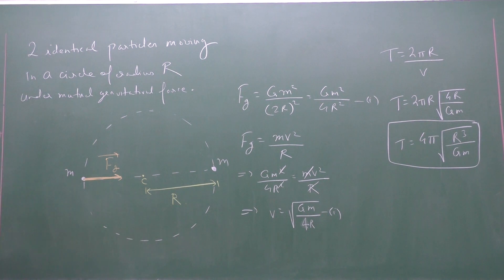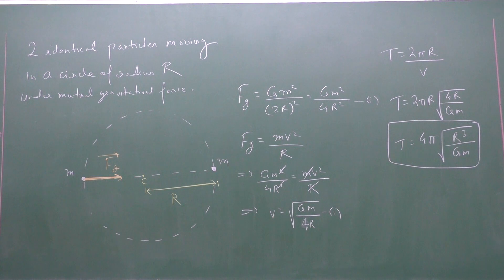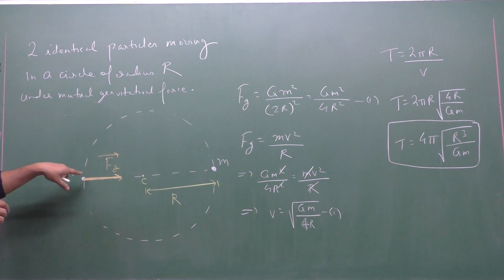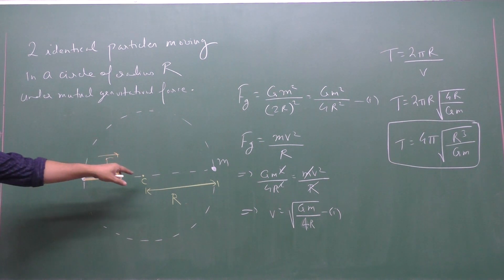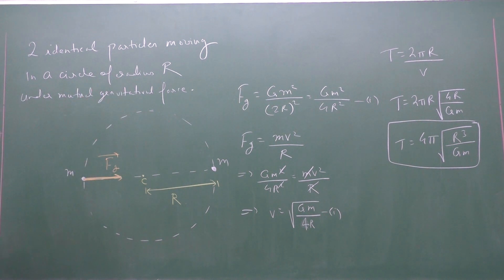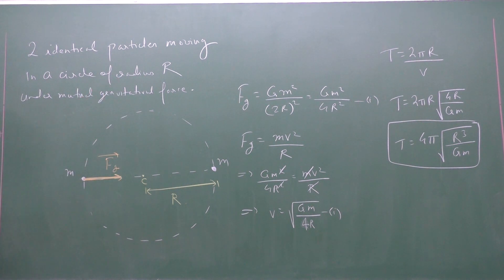This completes the case where two identical particles move in a circular path of radius R under mutual gravitational force. The approach was: find the net gravitational force on any one particle, confirm it acts towards the center, and equate it to the centripetal force.